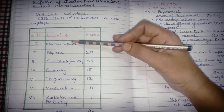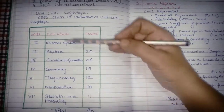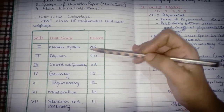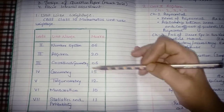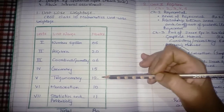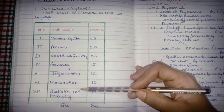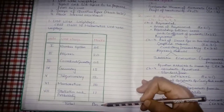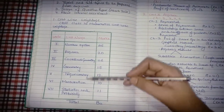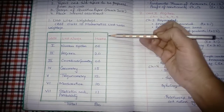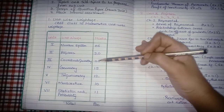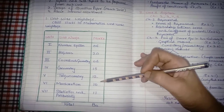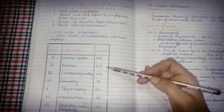You have a total of 15 chapters divided into these categories: Number System 6 marks, Algebra 20 marks, Coordinate Geometry 6 marks, Geometry 15 marks, Trigonometry 12 marks, Mensuration 10 marks, and Statistics and Probability 11 marks. Total paper is 80 marks, with all 15 chapters divided into seven categories.